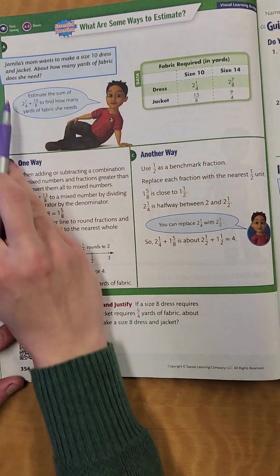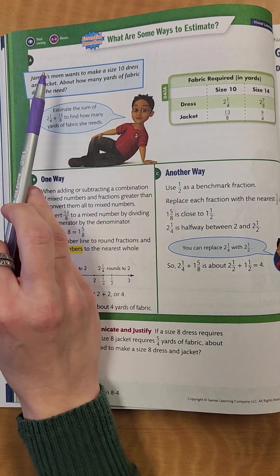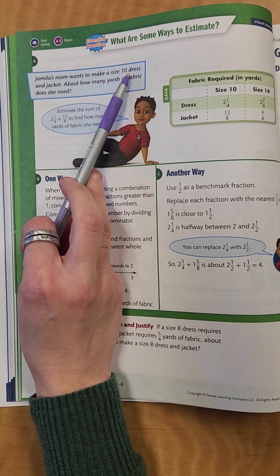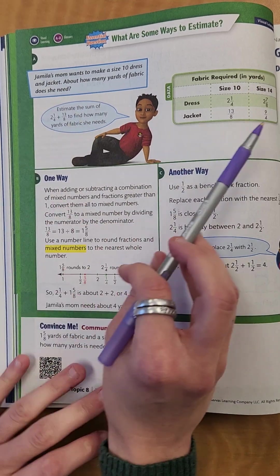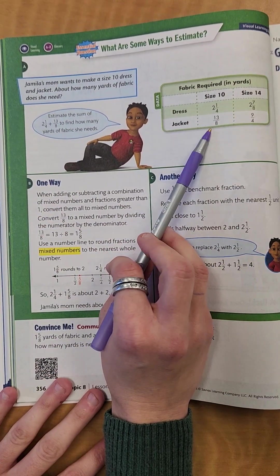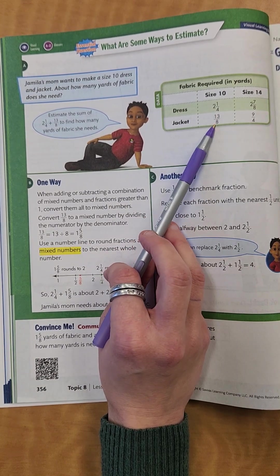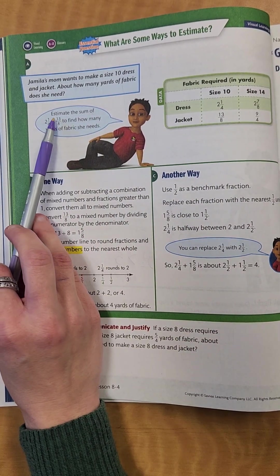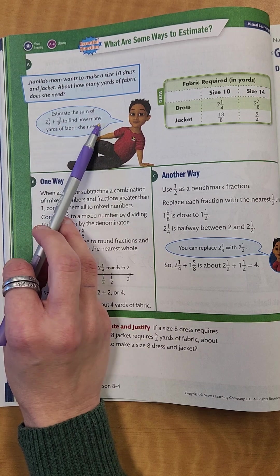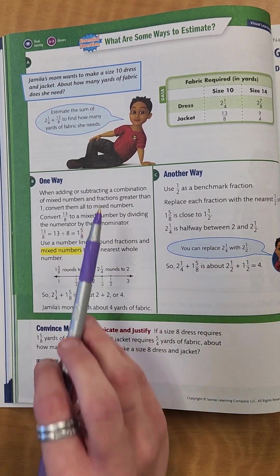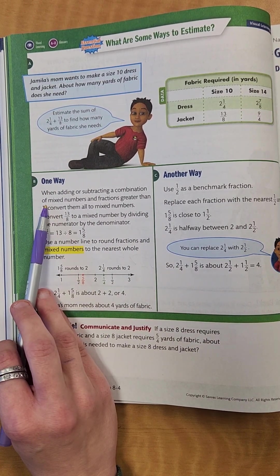Let's go to the next page. And so remember, these are just telling us another way we can do it. So let's read through this real quick. Jamalia's mom wants to make a size 10 dress and jacket. About how many yards of fabric does she need? So this is a size 10 dress and jacket. So you would need 2 and one fourth yards for a dress and 13 eighths for a jacket. So we're going to estimate the sum of 2 and one fourth plus 13 eighths to find how many yards of fabric she needs.